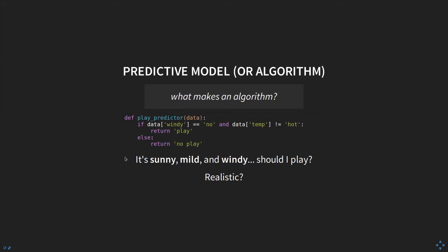Consider running the rule with input: sunny, mild, and windy. Since it is windy, the first condition already doesn't apply, so we return no play. Is this realistic? Probably, if you're a kid and it's sunny and mild, you'd likely play — but we didn't observe that scenario, and we constructed these rules to capture the existing information without accounting for generalizability, i.e., how the rule might apply to new data.